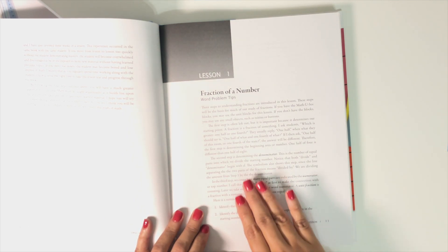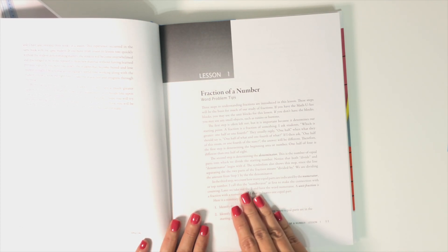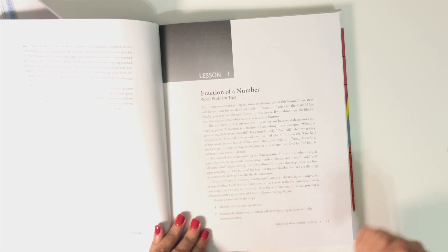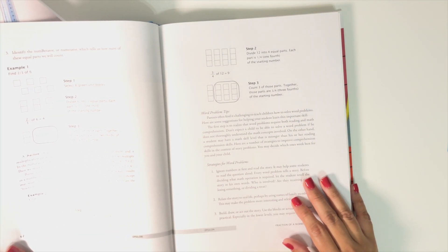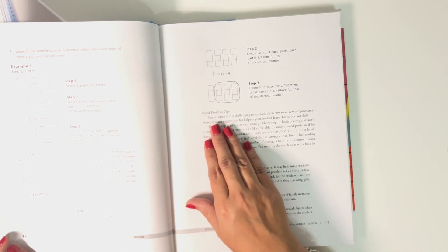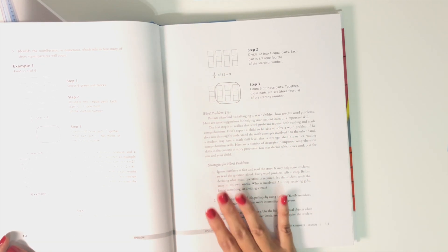It's important to note that the instruction manual is not written for the student. This is not a student textbook. This is truly an instruction manual for the parent to tell you how to teach the topic to your student. And that becomes obvious in certain parts like your word problem tips. Parents often find it challenging to teach children how to solve word problems. So this is giving you tips for how to teach the topic to your student.